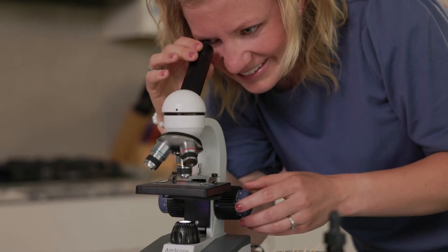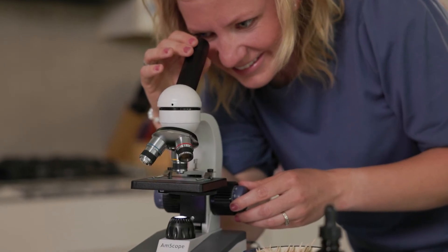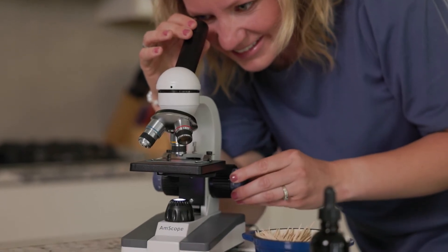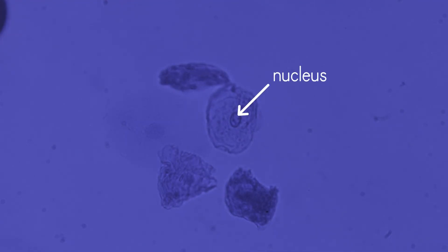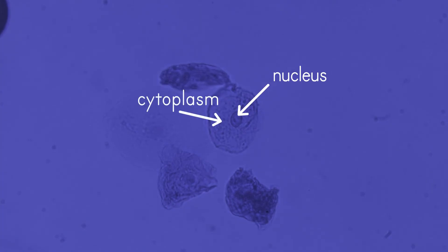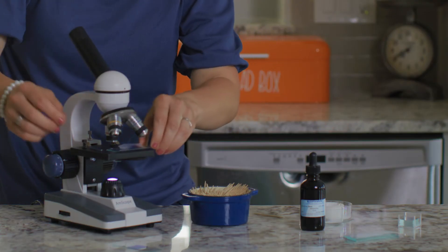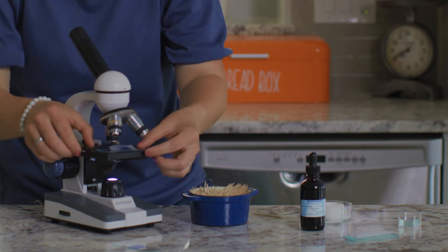Let's take a look at some skin cells from inside my cheek under the microscope first. Take a look at this. The dark blue circles you see are the nuclei, the command centers of the cells. The light blue color surrounding each nucleus is cytoplasm, and the outer circle is the cell membrane. Do you think the skin cells from my wrist look different than the ones from my cheek?